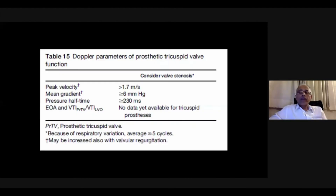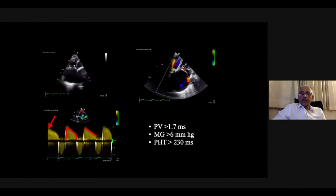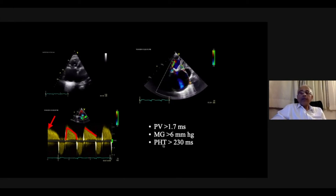For the tricuspid prosthetic valve, data is limited but the key parameters are peak velocity, mean gradient, and pressure half-time. A PHT greater than 230ms and mean gradient greater than 6 mmHg indicates obstruction. An example shows a dysfunctional bio-valve in the tricuspid position assessed by measuring peak velocity, mean gradient, and PHT.